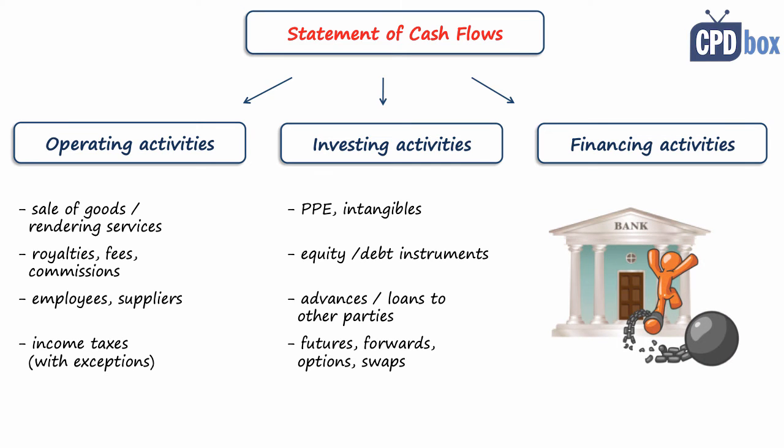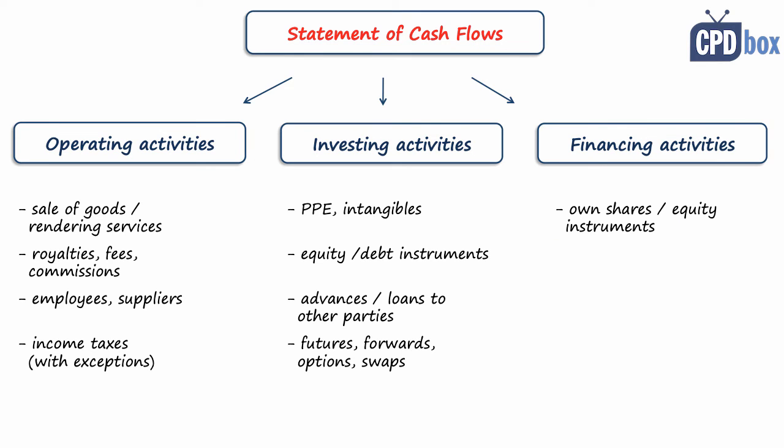Financing activities are activities that change the size and composition of the contributed equity and borrowings of the entity — essentially, how the business is financed. This includes cash payments to or receipts from equity owners for issuance or redemption of shares, and other equity instruments. Also included are cash receipts from issuing debentures, loans, notes, bonds, mortgages, and other borrowings, as well as cash outflows from their repayment. Finally, lessee's payments for the reduction of the outstanding lease liability enter into financing activities.